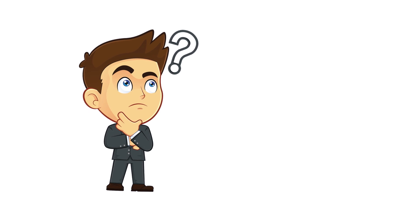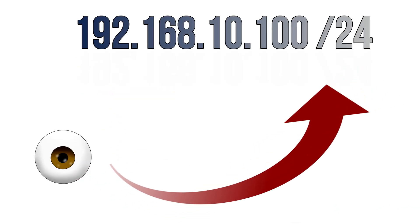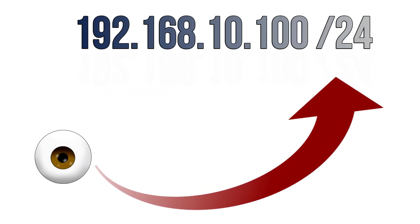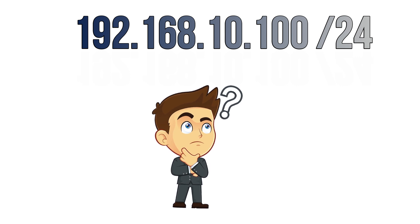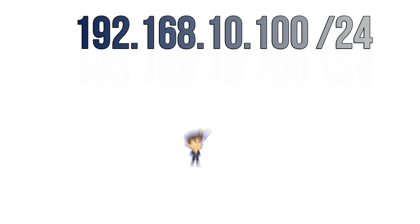How can we know which numbers belong to which part? Well, that's easy. Did you notice the slash 24 in the IP address? That number is telling you that 24 bits belong to the network part of this IP address. This brings us to the second aspect of the IP addresses: the network mask.